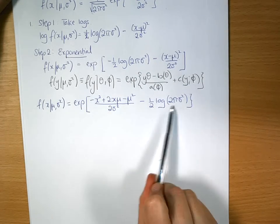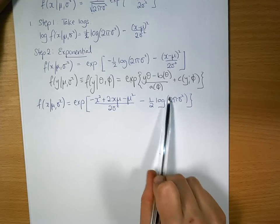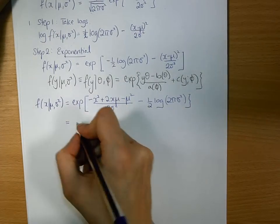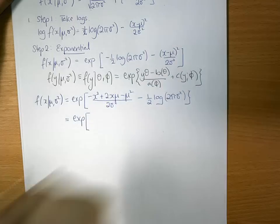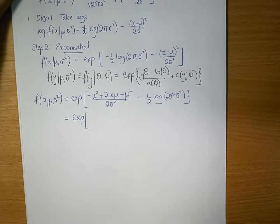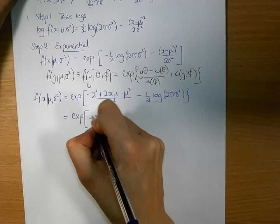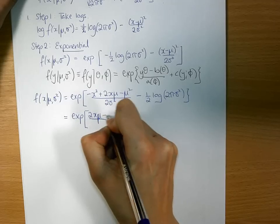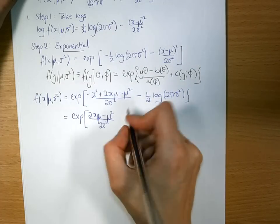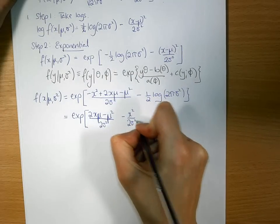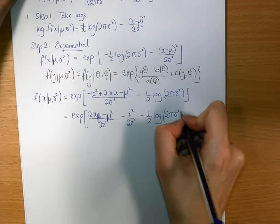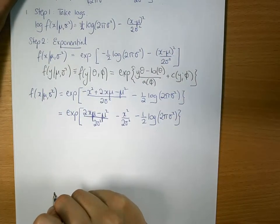Notice what's quite nice is 2 sigma squared is embedded within this. We'll keep together 2x mu minus mu squared over 2 sigma squared and shift this across. So minus x squared over 2 sigma squared minus a half log 2 pi sigma squared.